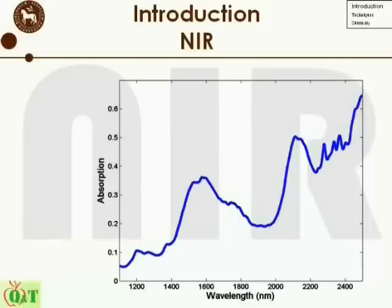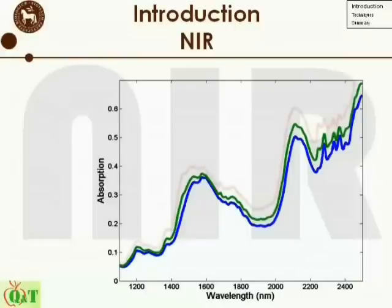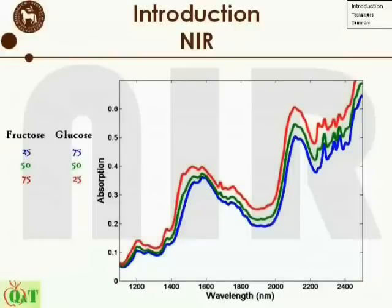Here you can see three recorded NIR spectra from 1100 to 2500 nm. These three samples are very simple — they are just mixtures of two sugars, glucose and fructose. The concentration of fructose is gradually increasing from 25% in the blue, to 50% in the green, and 75% in the red. As you can see from these three simple spectra, there are three features which are unwanted, especially from a PLS regression point of view.